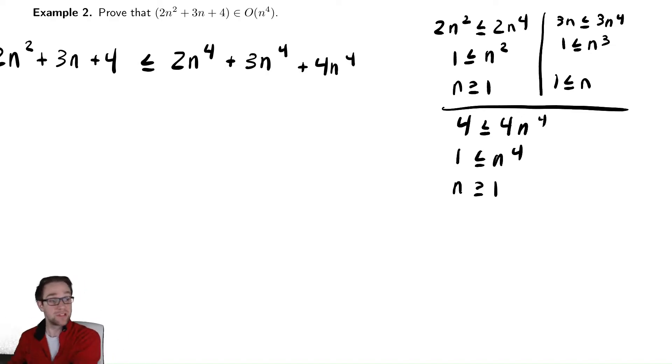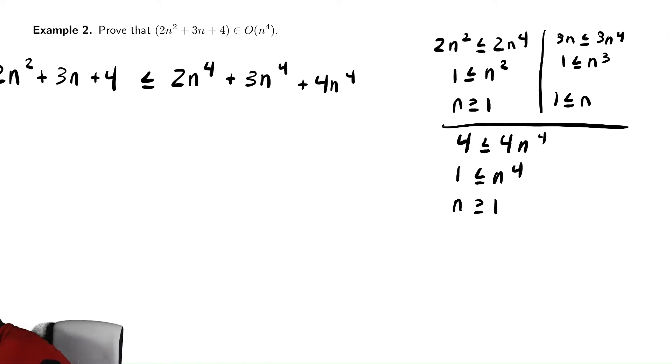The exact same reasoning we used in the previous problem, just changing n squared to n to the fourth, slightly different exponents appear. Otherwise, exactly the same. So this is true. Let's write down when it's true.